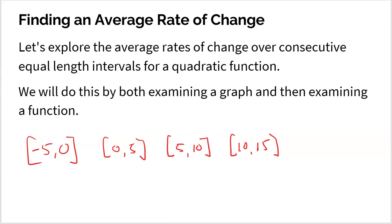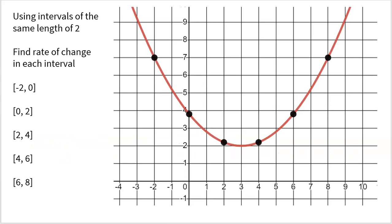We're going to do this by first looking at a graph, and then examine a function to see what happens with the rate of change over these consecutive equal length intervals. Here is a quadratic function in red, and we're going to find the average rate of change over each interval: negative 2 to 0, 0 to 2, 2 to 4, 4 to 6, and 6 to 8. These are consecutive — every time one ends the next begins — and they're all equal length of 2.